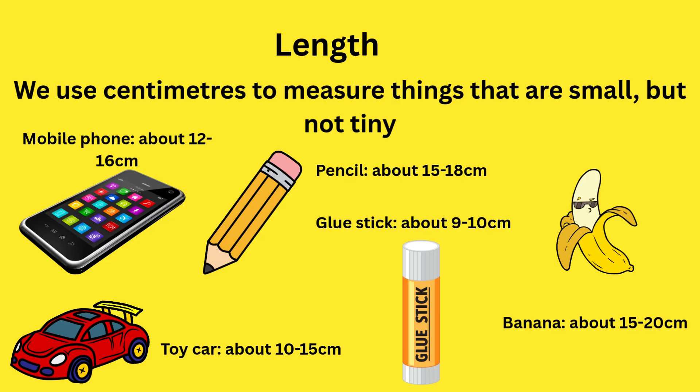We use centimeters to measure things that are small but not tiny. A mobile phone is about 12 to 16 centimeters. A pencil is about 15 to 18 centimeters. A glue stick is about 9 to 10 centimeters. A banana is about 15 to 20 centimeters. And a toy car is about 10 to 15 centimeters.